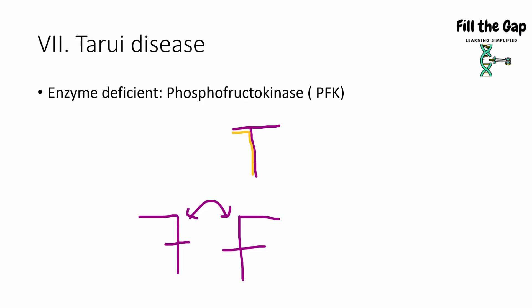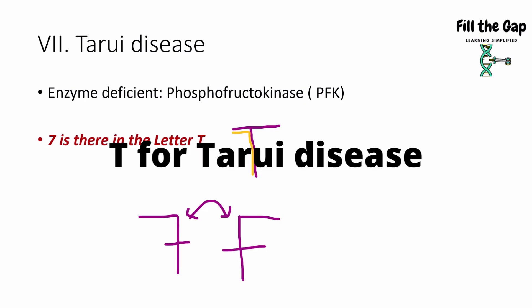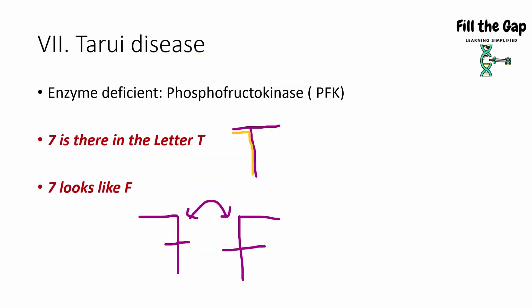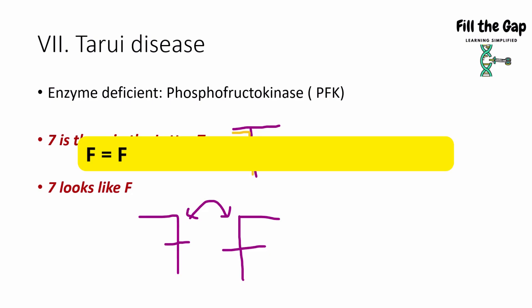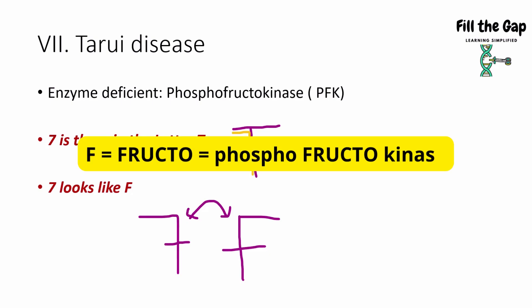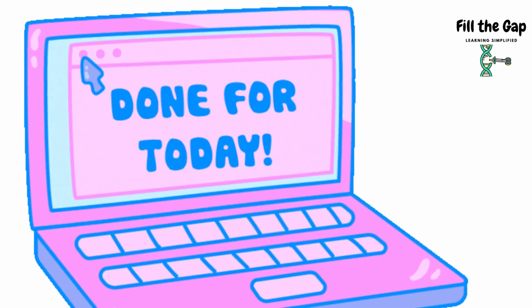Next is Tarui's disease. The enzyme deficient is phosphofructokinase, also called PFK. If you look at the letter T, you can see a 7 hidden inside — T for Tarui's disease and 7 because this is the seventh disease. If you write the number 7 and look at its inverted image, it looks like the letter F — and F helps you remember 'fructo' in phosphofructokinase.